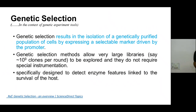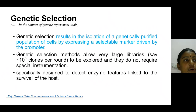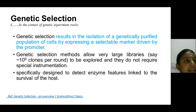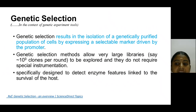Genetic selection results in the isolation of a genetically pure population of cells by expressing a selectable marker driven by a promoter. Genetic selection methods allow very large libraries — approximately 10 to the power of 9 clones per round — to be explored, which do not require any special instrumentation. Genetic selection offers the isolation of a genetically pure population of cells.